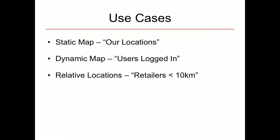I want to set some context around location and mapping, making sure we're all on the same wavelength. Some use cases for location mapping in a Drupal website: one might be a static map on a brochure website where you just want to show where the store's location is. Another might be a dynamic map where every time you visit the page it would be slightly different. And another would be showing relative location data — for example, retail locations within a 10 kilometer radius of your current position.